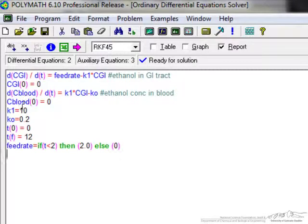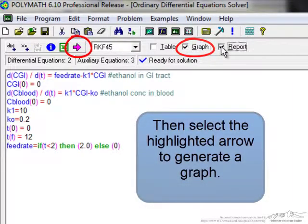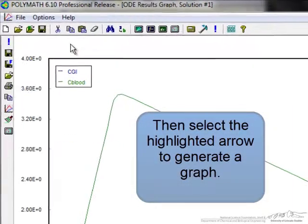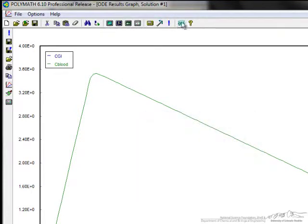We want the equation integrated from zero to two hours with a value of two here, and integrated longer with a value of zero. Now you'll notice the arrow is highlighted, meaning the problem is completely specified and we can solve it.